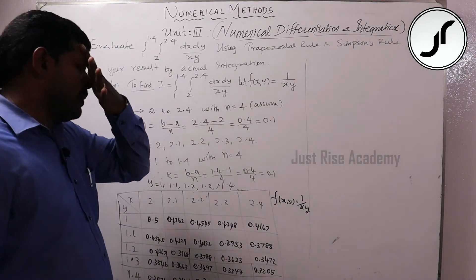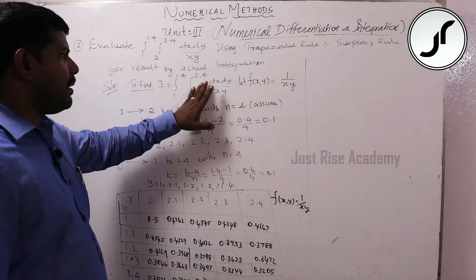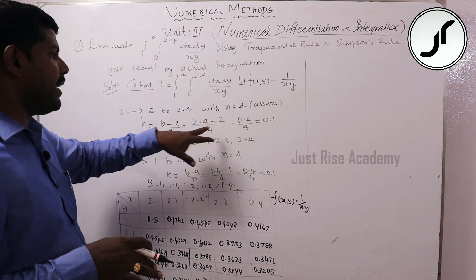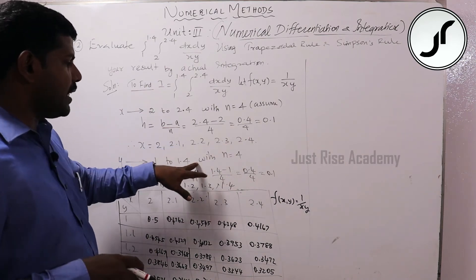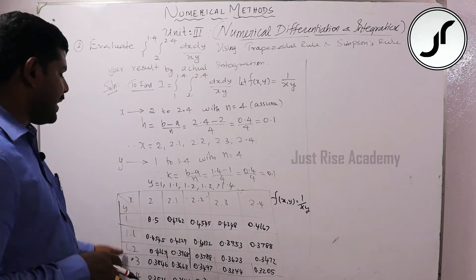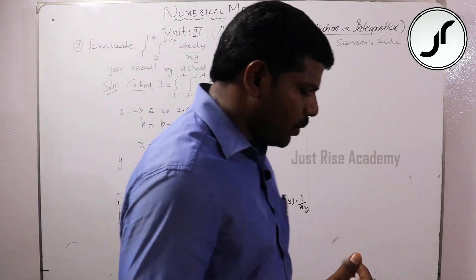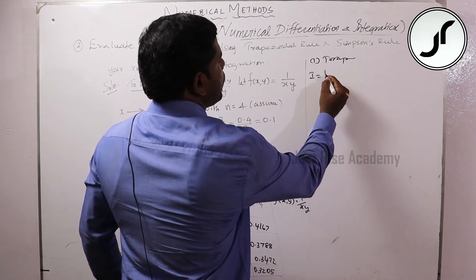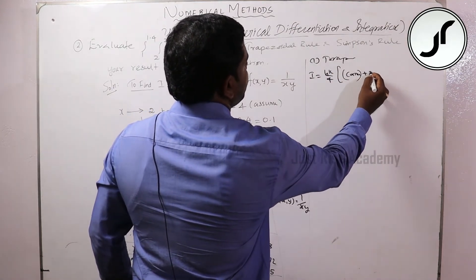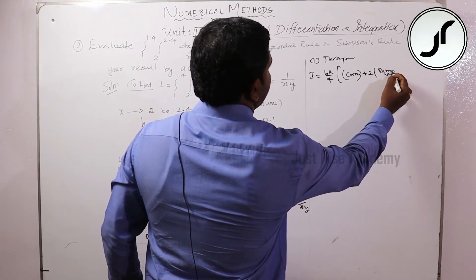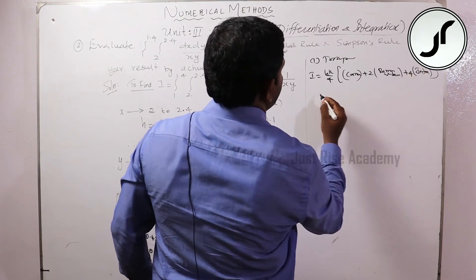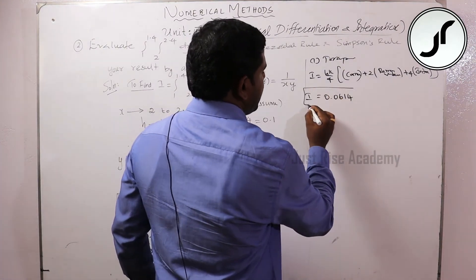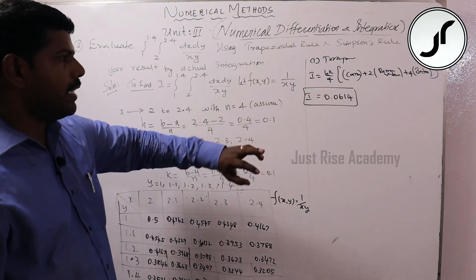For the double integral using the Trapezoidal rule: I = HK/4 into [4 corner values + 2 into remaining boundary values + 4 into interior values]. Applying this with h = k = 0.1 gives I = 0.0614.